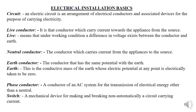Quickly, the basics around installation: we have a circuit, and a circuit is an electrical arrangement showing how the components depend on one another. In a circuit we have conductors, and in the electrical field we have three main conductors. The live — sometimes called the phase — carries current to the circuit. The neutral conductor carries current from the circuit back to the supply.